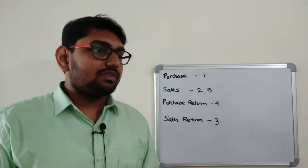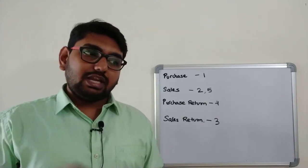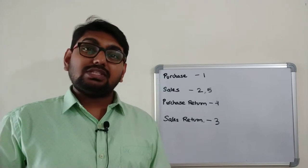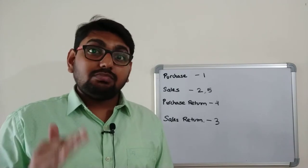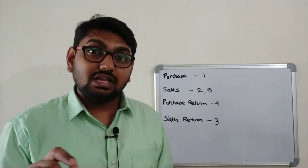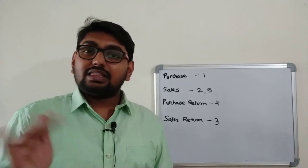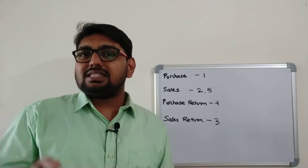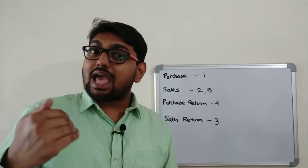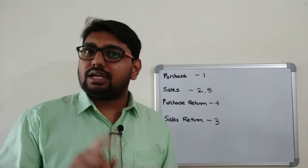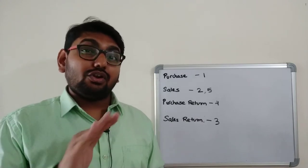The sixth transaction: placed an order with Bruce for goods worth rupees 25,000. I am just placing the order — Bruce is not sending the goods right away. This is a no-entry transaction, because when you place an order you cannot pass a journal entry. The goods should actually be delivered before you can record a purchase. So this entry is not going to be posted anywhere.